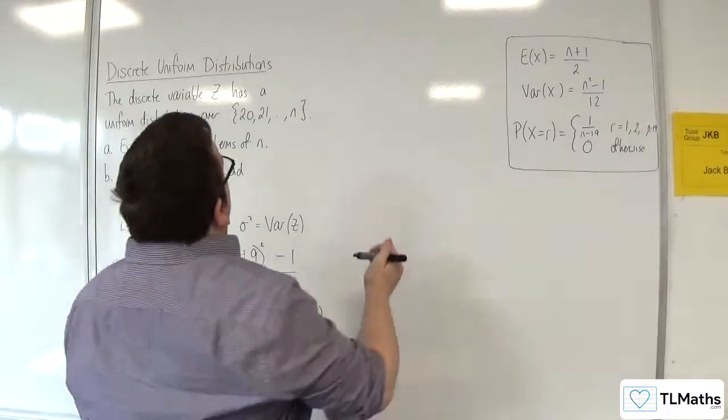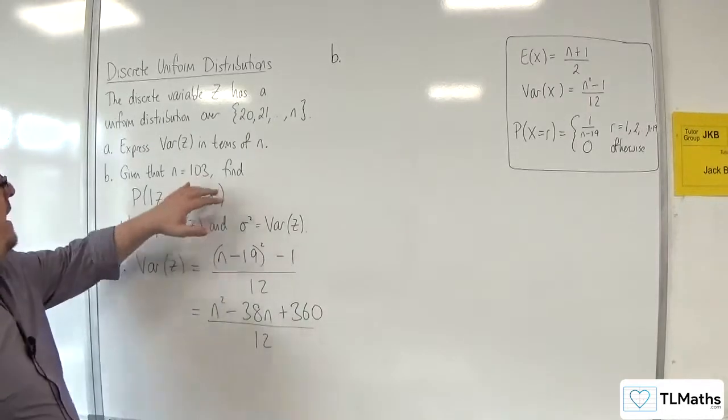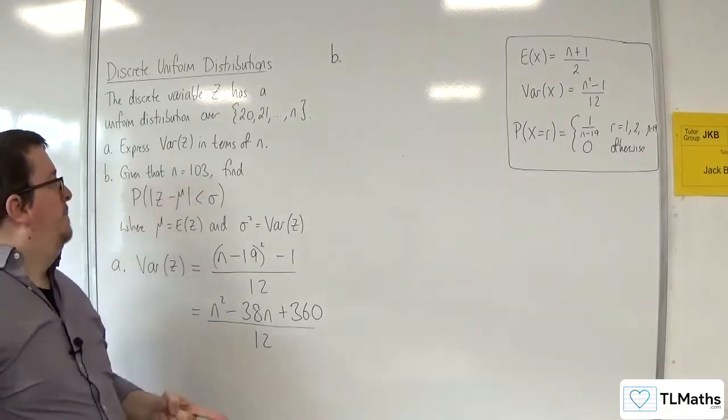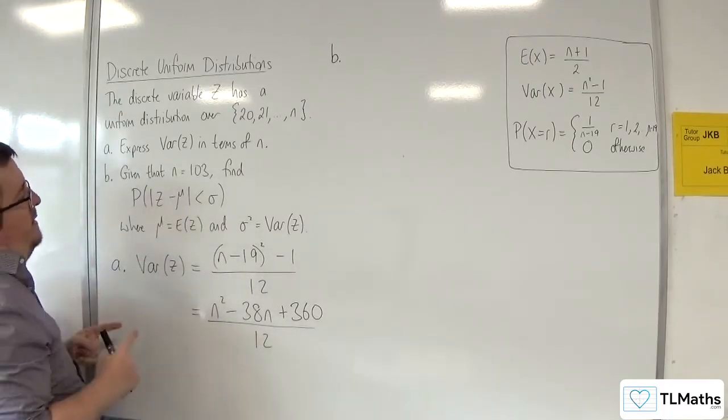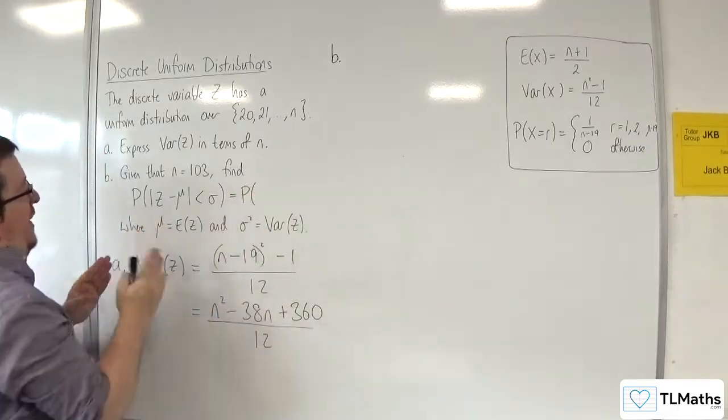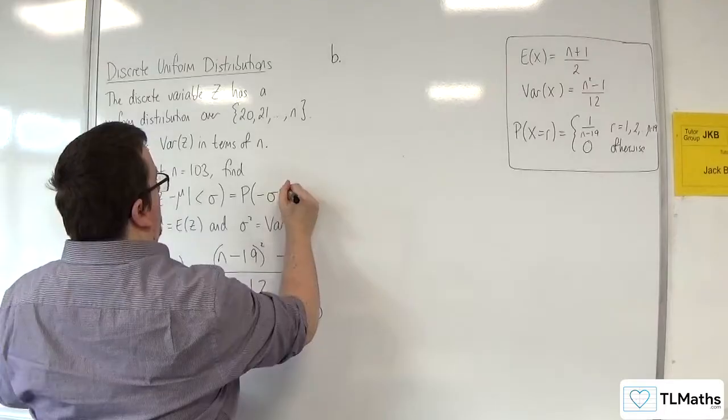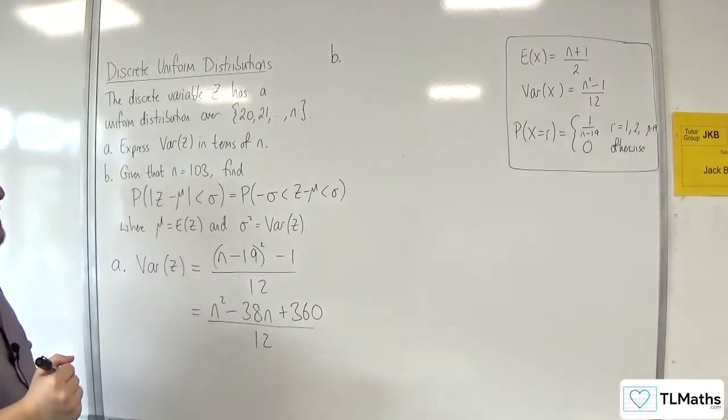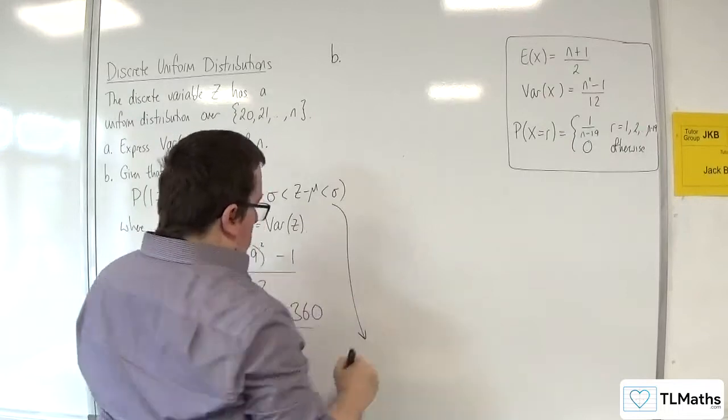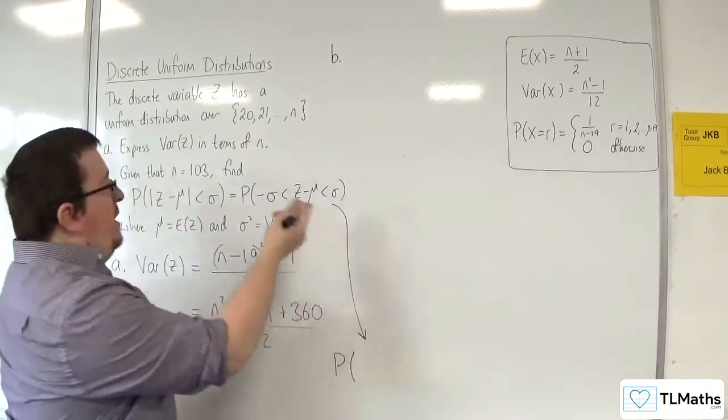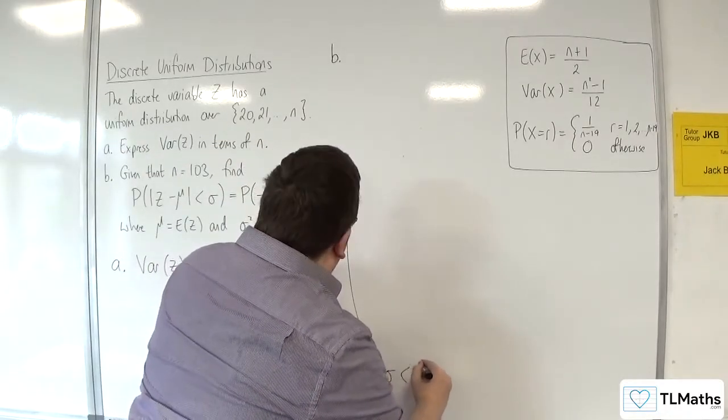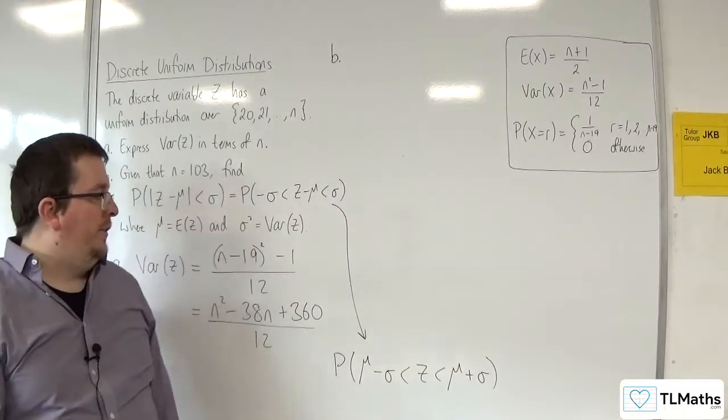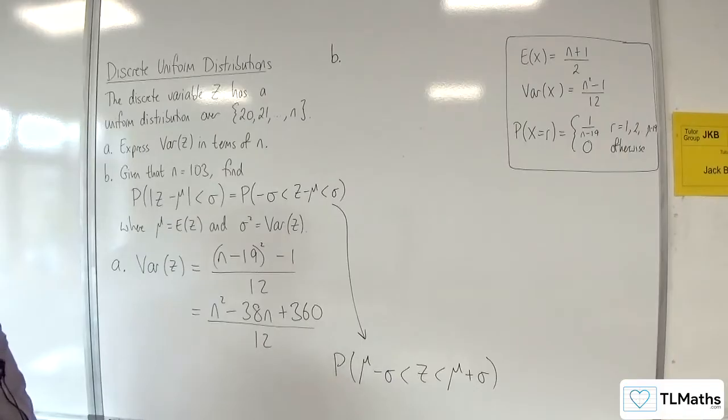Part B. Given that n is 103, find the probability of the modulus of z - μ being less than σ. Remember what those modulus signs here mean. This would mean that this is the probability of z - μ being between -σ and positive σ. I can rewrite that also by adding μ to both sides. This is μ - σ < z < μ + σ.